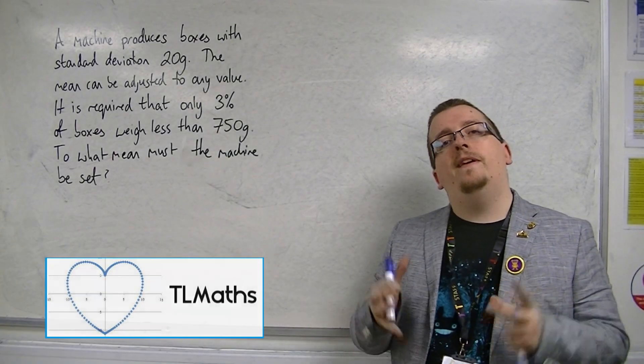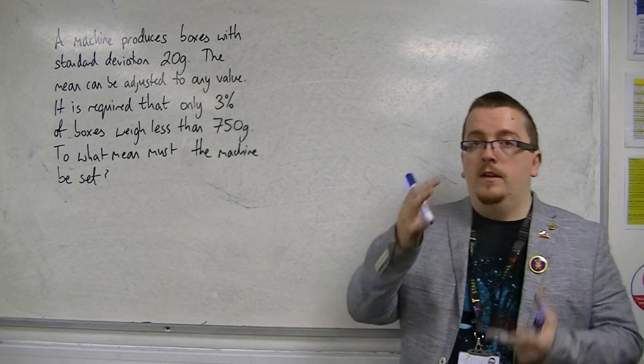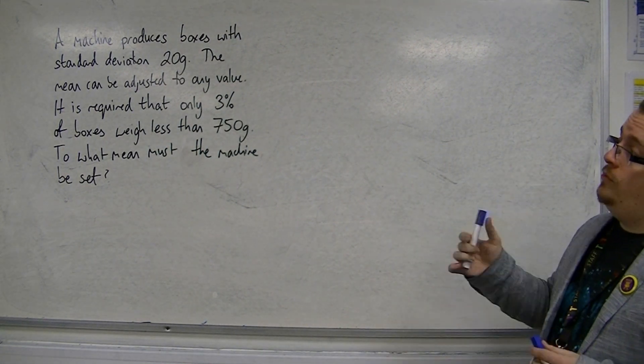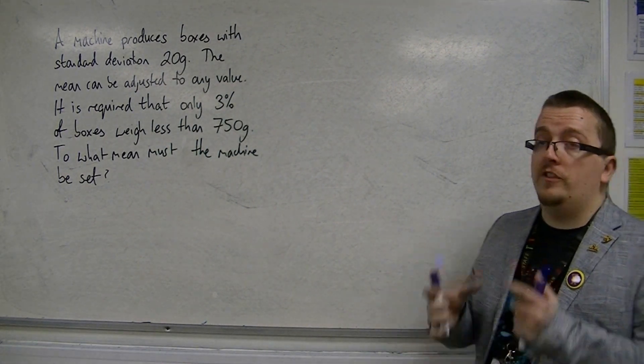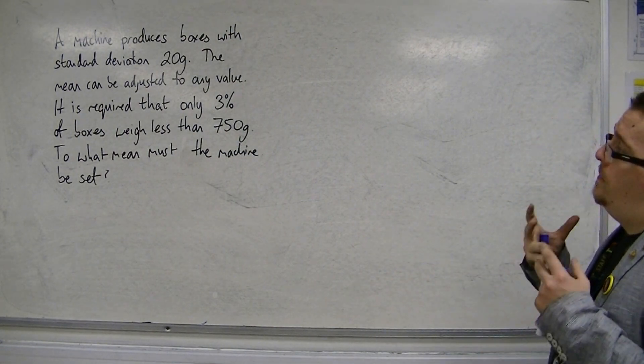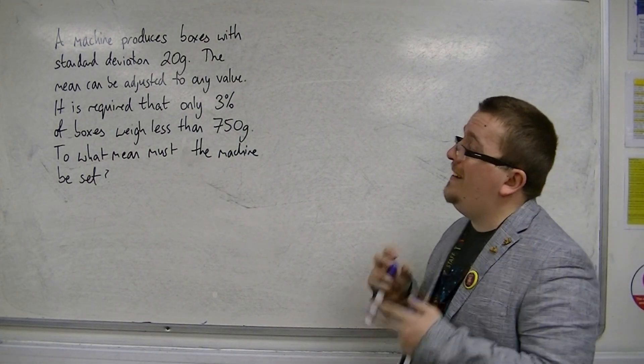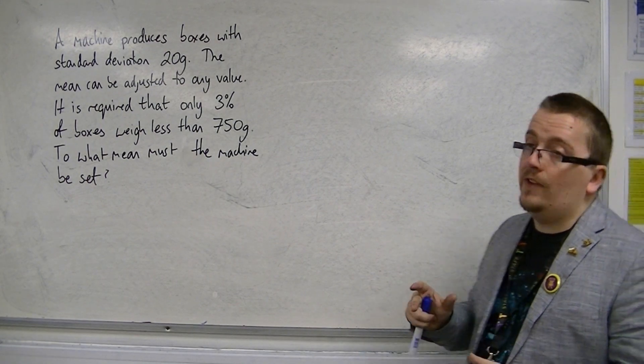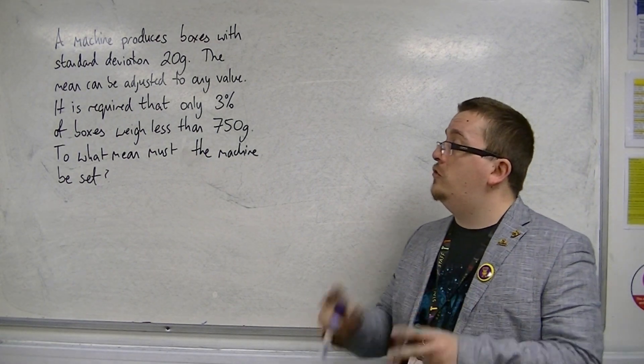Okay, so continuing with examples of using the inverse norm. In this video, a machine produces boxes with a standard deviation of 20 grams. The mean can be adjusted to any value. It is required that only 3% of boxes weigh less than 750 grams.